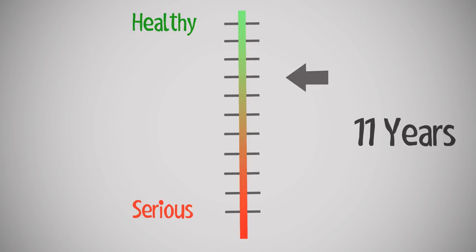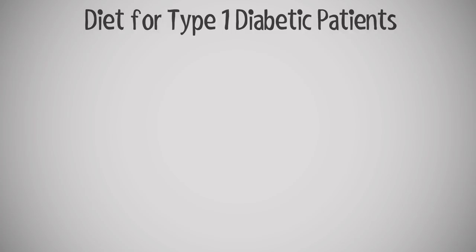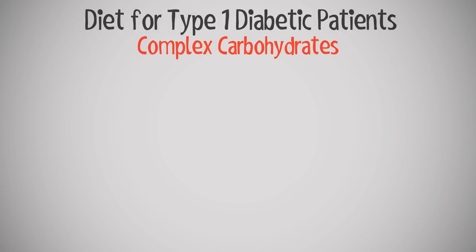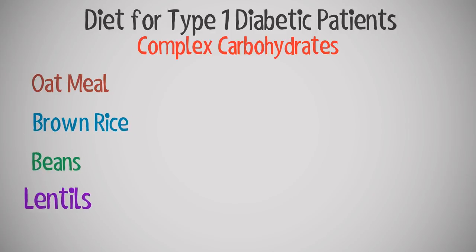Life expectancy improves with a healthy lifestyle, technology, regular exercise, and maintaining a healthy weight. Type 1 diabetic patients should regularly eat foods with complex carbohydrates such as oatmeal, brown rice, beans, and lentils.